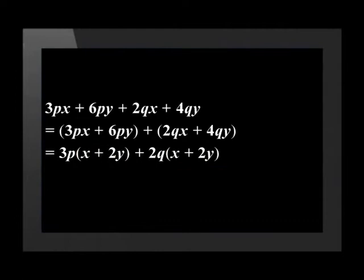It's always easier to see how to take out the common factor if it's highlighted. We begin by writing x plus 2y in brackets, and opening another bracket to write what is left after we divide each term, which is 3p plus 2q.